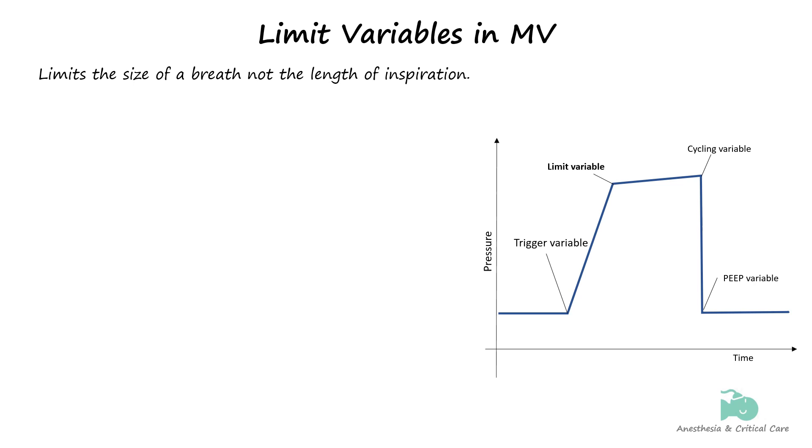The limit variable is a setting which constrains or limits the parameters of a mechanical breath like pressure, flow, and volume during the inspiratory phase. Limits are set to make sure all the other variables don't go out of control in the process of achieving the control variable.